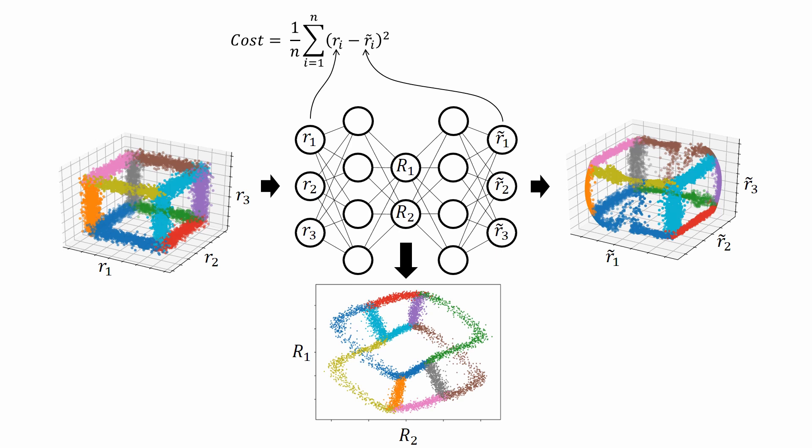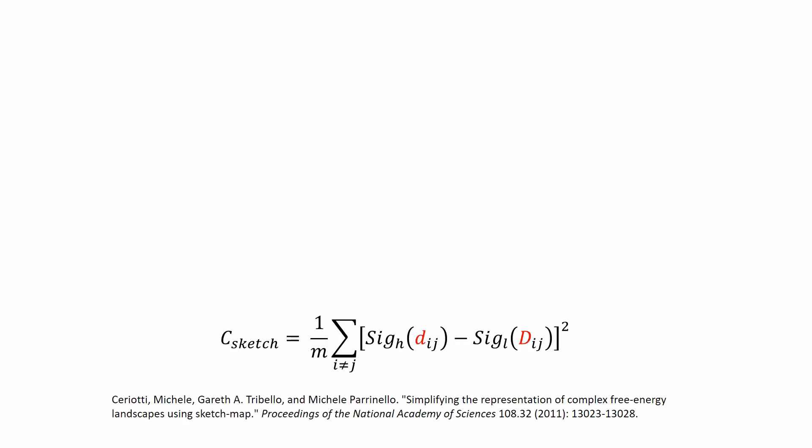This is where the second method encoder map is based on comes into play. This is the cost function of a method called sketch map. Sketch map is a variant of multidimensional scaling. The basic goal in multidimensional scaling is to arrange the points in the low-dimensional map in such a way that pairwise distances in the low-dimensional and the high-dimensional space are equal.